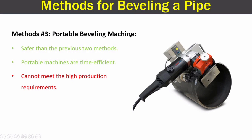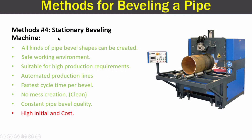The third method of pipe beveling is using a portable beveling machine. This is a safer method than the previous two, which is a good thing. These portable machines are also time efficient because we can take the machine to every pipe and perform the beveling process. The problem with this method is that the portable beveling machine cannot be used for high production.